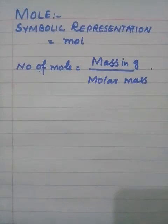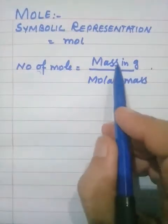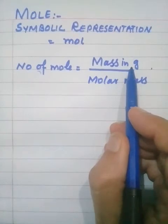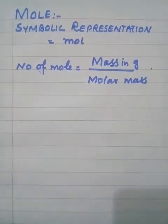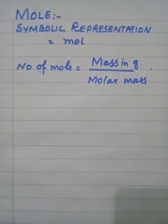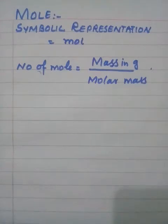In mole-mass calculations, we can calculate the number of moles of a substance from the known given mass of the substance. When a chemical reaction occurs, changes take place that can be expressed in terms of moles and masses.